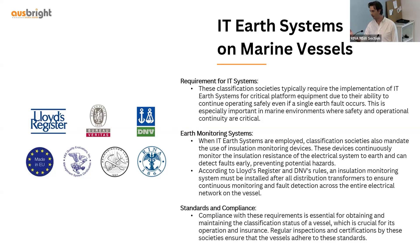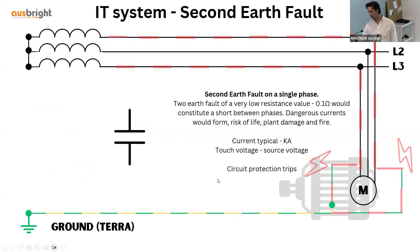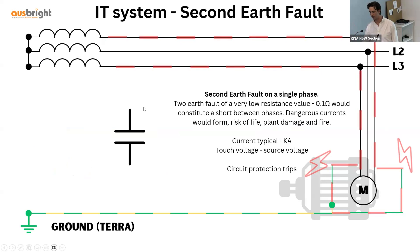Classification societies will say that if you use an IT Earth system, you have to have an insulation monitoring system behind it. The reason is this: you can have one Earth fault, but as soon as you have two Earth faults on a different phase, you effectively have a short between phases, which generates an incredibly high fault current and a very low resistance value. Your plant is going to trip, and your circuit protection is going to operate.